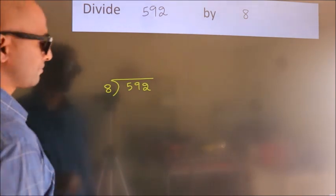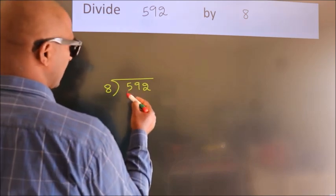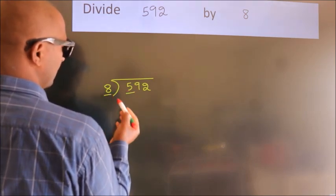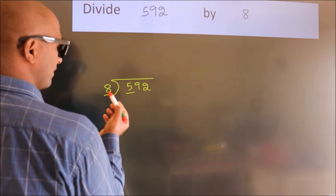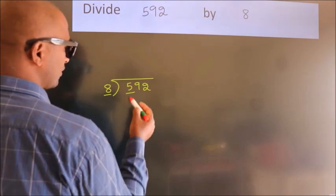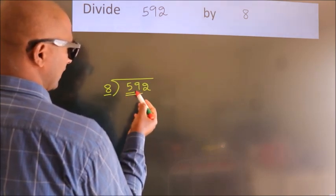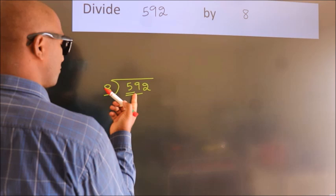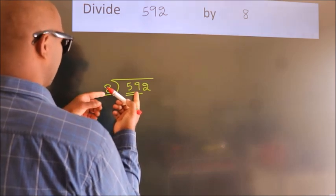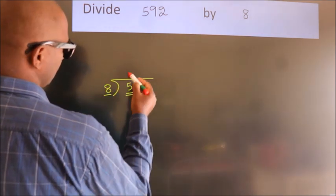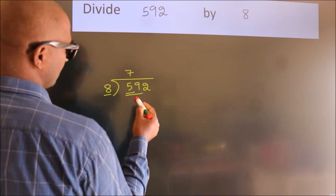Next, here we have 5, here 8. 5 is smaller than 8, so we should take 2 numbers: 59. A number close to 59 in the 8 table is 8 times 7, which is 56.